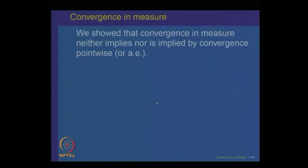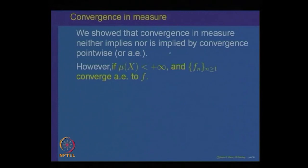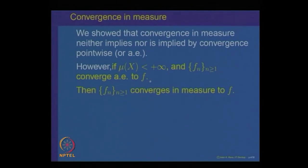In the previous lecture, we showed that convergence in measure neither implies nor is implied by convergence pointwise or almost everywhere. However, we proved that if the underlying measure space is finite and F_n converges to F almost everywhere, then it also converges in measure. That is, convergence in measure is implied by convergence almost everywhere when the underlying measure space is finite.